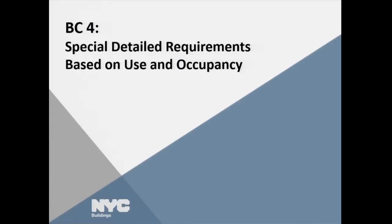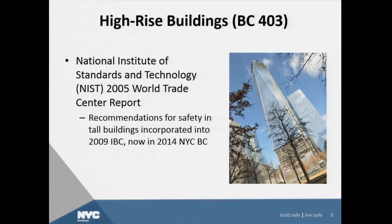Moving on to chapter four, use and occupancy and special requirements. We will be dealing with high-rise and other types of special buildings, as in the 2008 code. This was all based on the National Institute of Standards and Technology, the World Trade Center report. Some recommendations were already incorporated in the 2008 code, and we're expanding on that and adding more into the 2014 code, because a lot of it was also incorporated in the 2009 IBC.